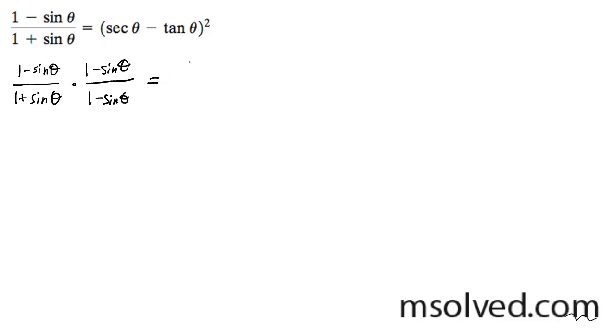I'm going to multiply these out. I'm going to do all the steps. So the numerator is going to be 1 minus 2 sine theta plus sine squared theta. And the denominator is going to be 1 minus sine squared theta.